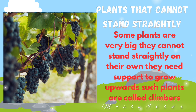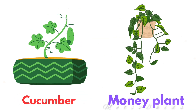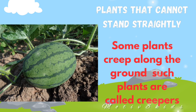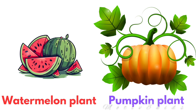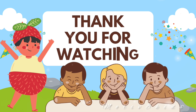Climbers need support to grow upwards. Cucumber and money plant are some examples of climbers. Now, some plants creep along the ground — such plants are called creepers. Watermelon and pumpkin are examples of creepers. That's all about the different types of plants. I hope you all enjoyed this video.